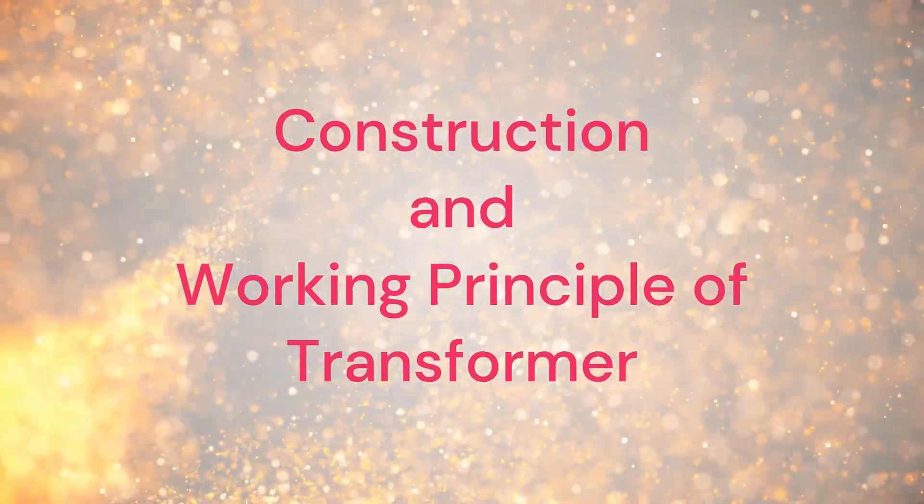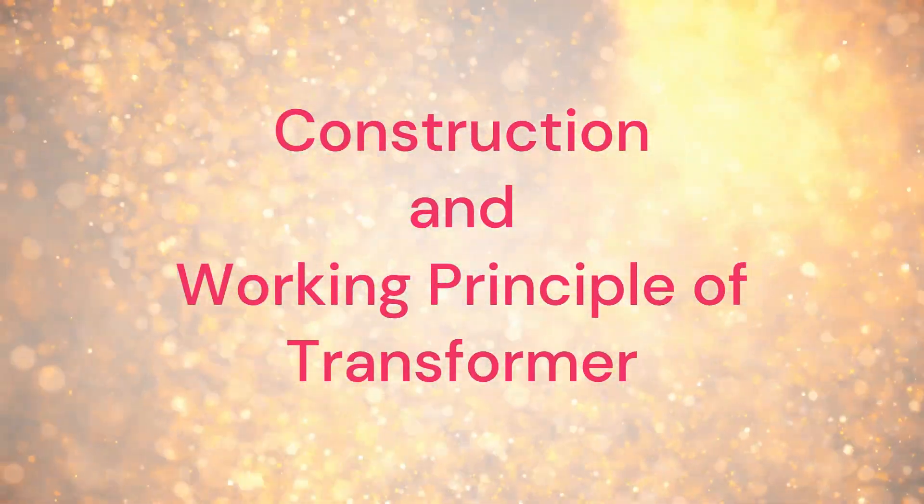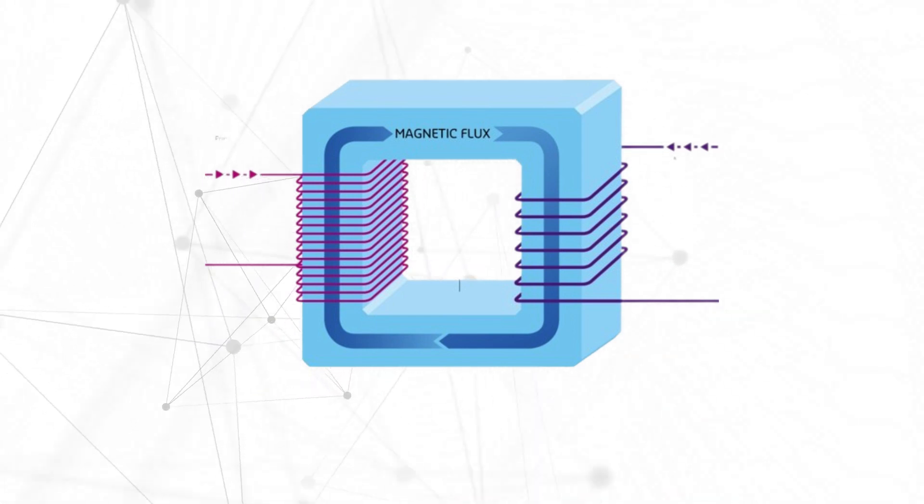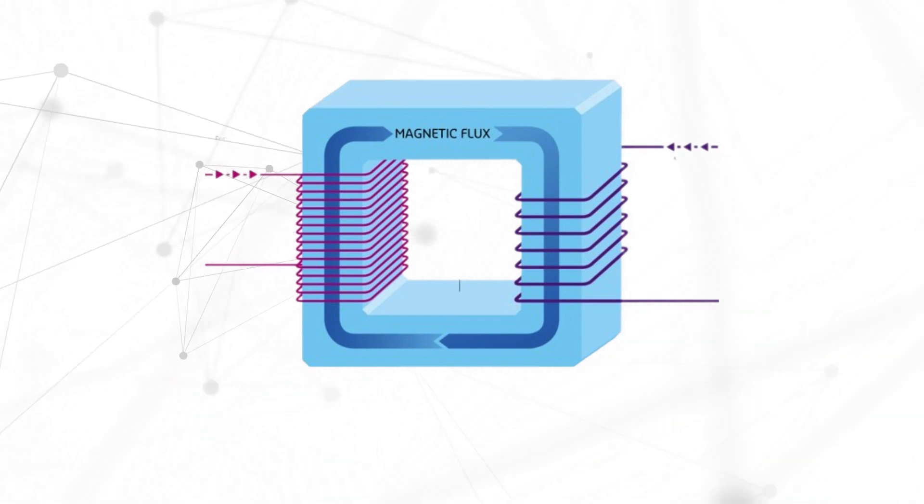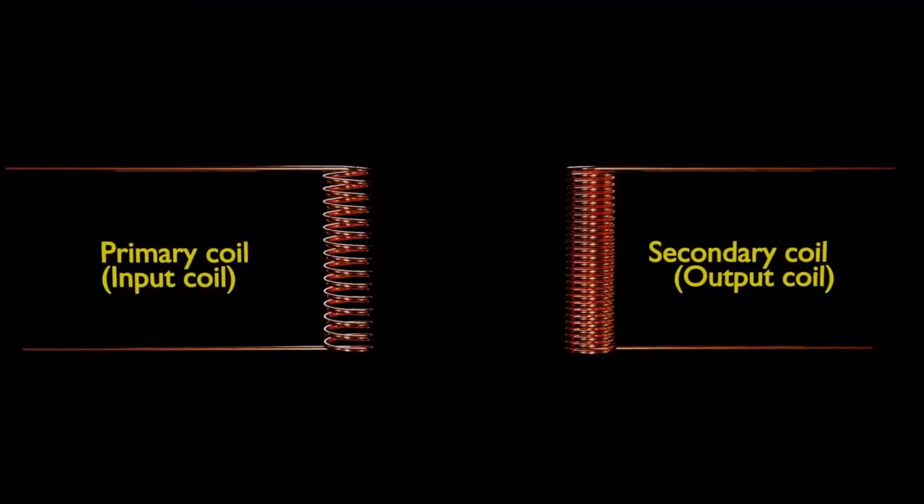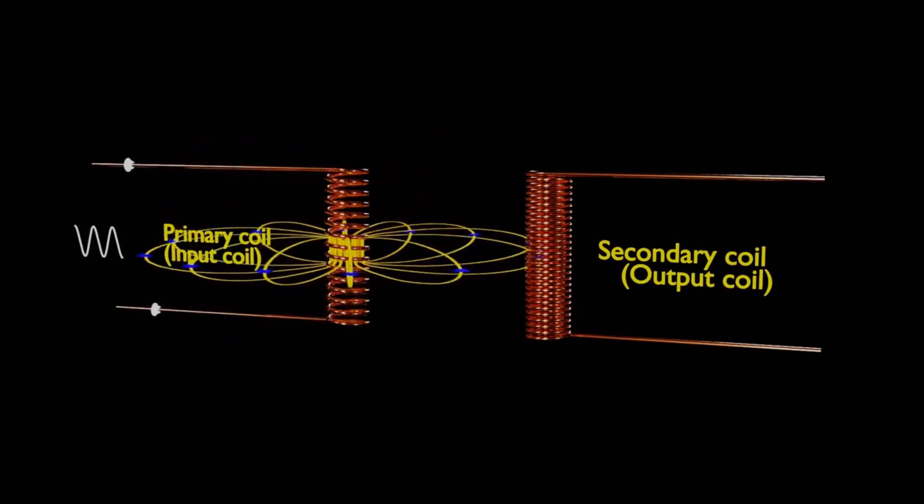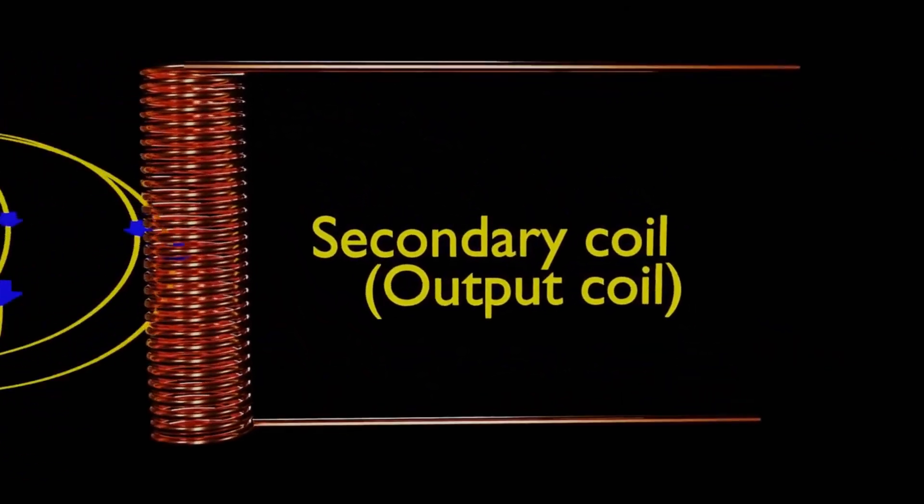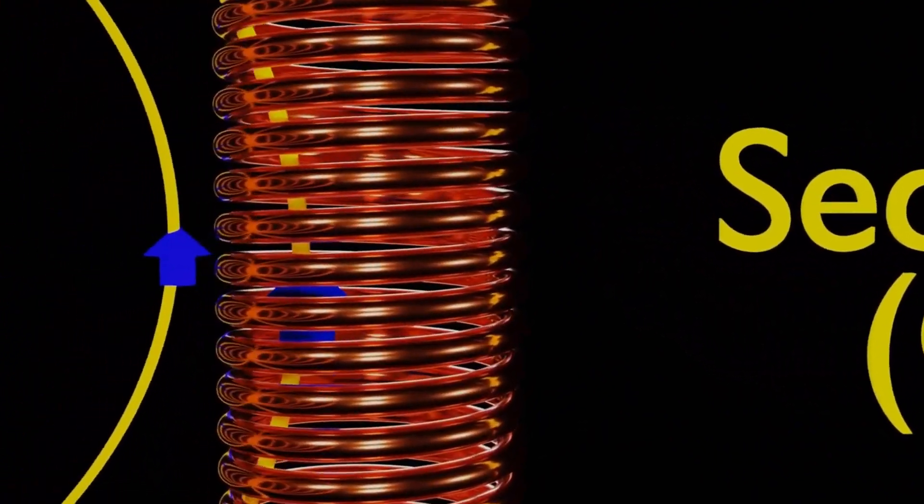Next, let's delve into the construction and working principle of transformers. A typical transformer consists of coils wound around an iron core. This core efficiently channels the magnetic field. As the primary coil's AC current creates a magnetic field, it induces a voltage in the secondary coil. This principle governs the transfer of energy.